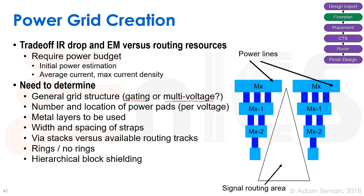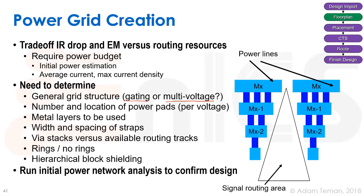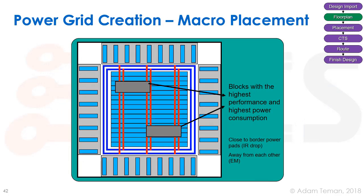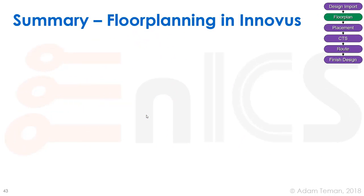We must also decide which layers to use, their width and spacing, via stacks, whether to have rings and shielding. If the top layers are all used for power, little room remains for signal routing. An initial power network analysis or early rail analysis confirms correctness. High-performance, high-power blocks should be placed close to edges to minimize IR drop. Modern designs use flip chip, where package connections land in the middle of the chip, giving direct VDD/GND access to central metal layers — much more expensive than wire bonding.